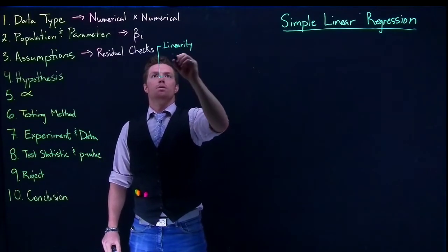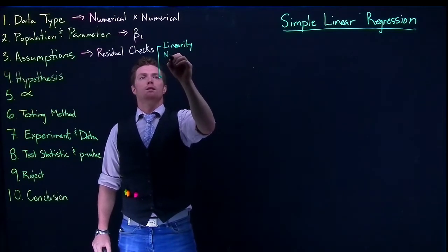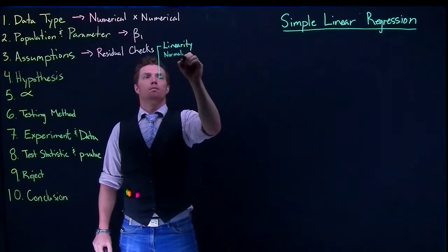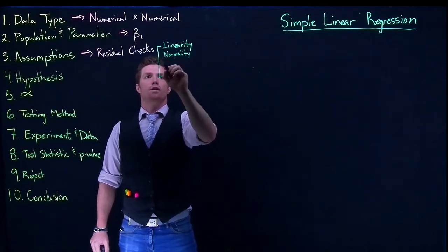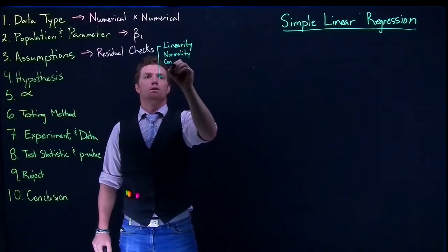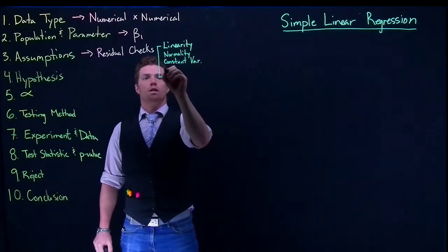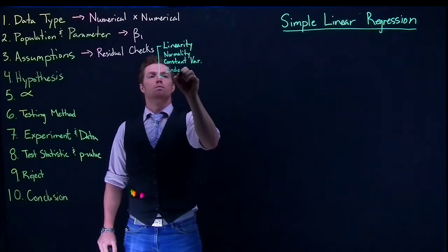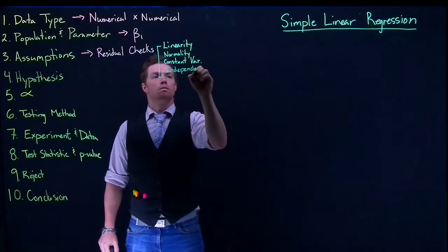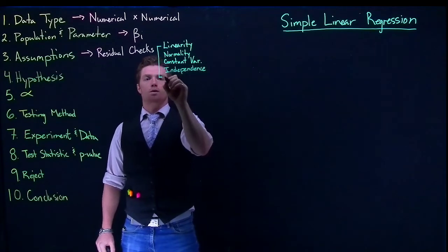And those residual checks boiled down to we were checking for linearity, normality, constant variance, independence, and centered about zero.